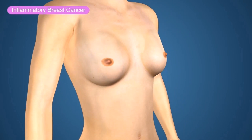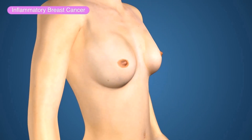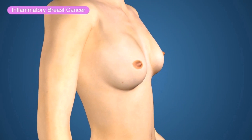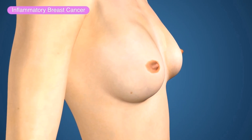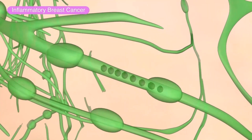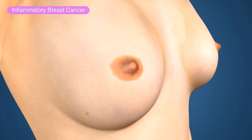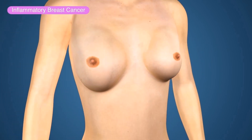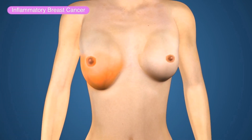Inflammatory breast cancer is an uncommon but aggressive form of breast cancer in which the lymph vessels of the breast become blocked by cancer cells. The breast becomes large in size and looks swollen, red, and warm.